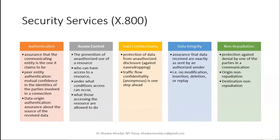Peer entity authentication means mutual confidence in the identities of parties involved in communication. For example, a mobile device and an access point are communicating — they should be able to authenticate each other. When you connect to a wireless access point, you select the SSID and give the password. This password and SSID allow the access point to identify your device, and your device also sends messages only to the connected hotspot.